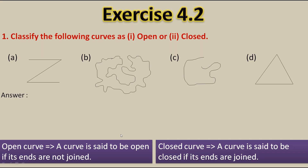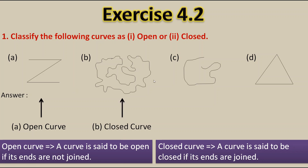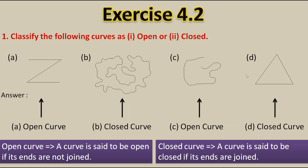In the first diagram the ends are open — they are not joined — therefore this is the open curve. Here the ends are joined, therefore it is a closed curve. Here the ends are not joined therefore it is an open curve, and here the ends are joined therefore it is a closed curve. So this is the answer of the first question.